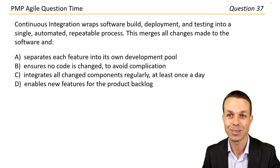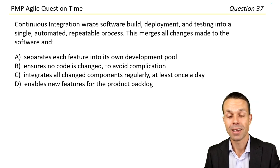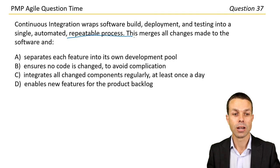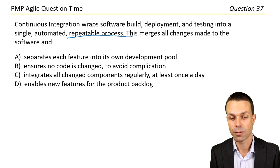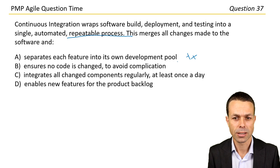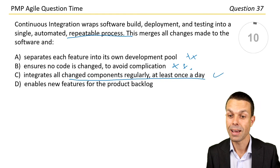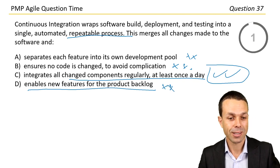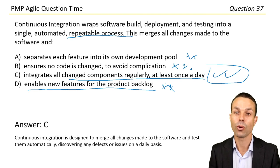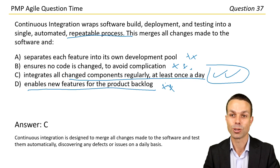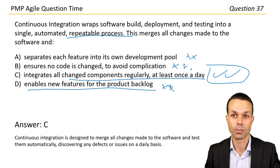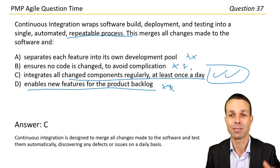Continuous integration wraps software build, deployment, and testing into a single automated repeatable process. Which statement best describes what it does? Options include: separates each feature into its own development pool; ensures no code is changed; integrates all changed components regularly, at least once a day; or enables new features for the product backlog. Answer C: continuous integration is designed to merge all changes made to the software and test them automatically, discovering any defects or issues on a daily basis.